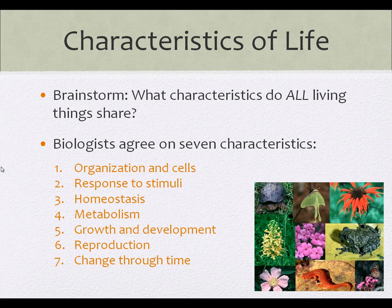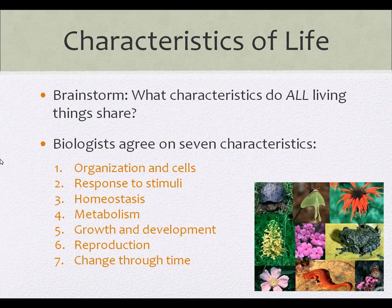Biologists agree on seven main characteristics. You may see it broken down into more than seven or less than seven, but all of these things will be included. The first one is organization in cells, response to stimulus, homeostasis, metabolism, growth and development, reproduction, and change through time. I'm going to quickly go through all seven of these.